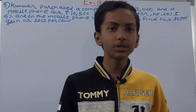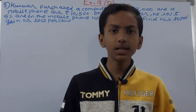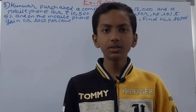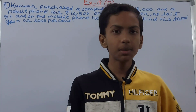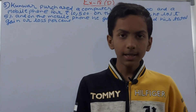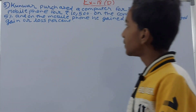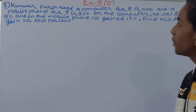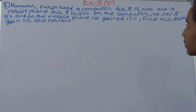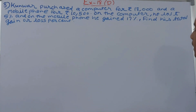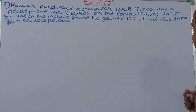Hello friends, welcome back to my YouTube channel Unlock Your Learning. In this video we are going to solve ICSE Mathematics Class 7th Chapter 18, Percentage and its Applications, Exercise 18D Question 8. Kunwar purchased a computer for ₹18,000 and a mobile phone for ₹10,500. On the computer he lost 5% and on the mobile phone he gained 17%. Find his total gain or loss percent.